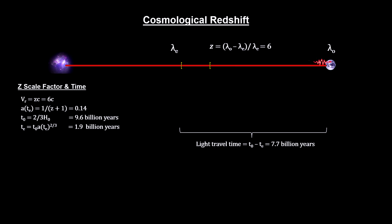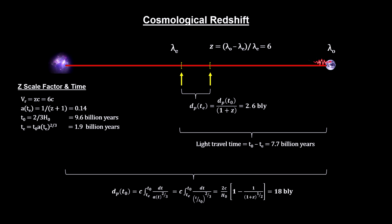Redshift gives us the distance to the object at the current time, and it gives us the distance to the object at the time the light was emitted.